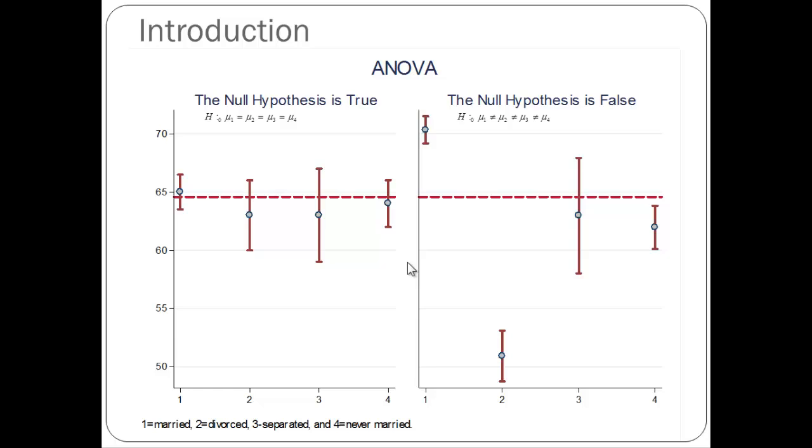The individual dots represent the means of those different groups with a 95% confidence interval. And you can see that three of them are different from the overall average, and two of them are quite different from each other, that is the married compared to the divorced, with the married group being above average and the divorced group being below average. This type of graph is consistent with the alternative hypothesis that at least two of these means are different from each other.